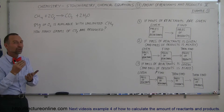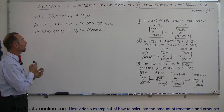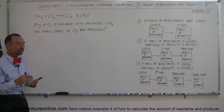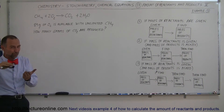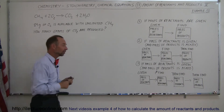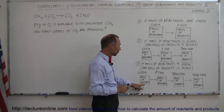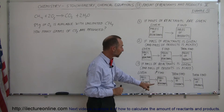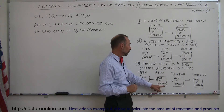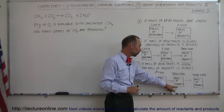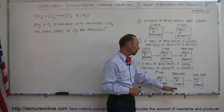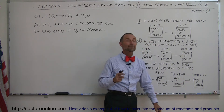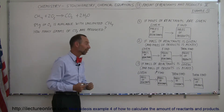In this case, they gave us the number of grams of one of the reactants and they want to know the number of grams of one of the products, which means we have to go through a three-step process. First, we take the mass of the reactant and convert it to the number of moles of the reactant. Then we convert the number of moles of the reactant to the number of moles of the product. Then we take the number of moles of the product and convert it to the mass of the product.